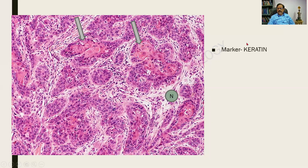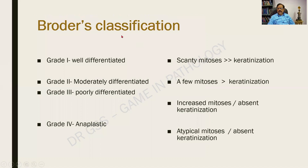The marker for squamous cell carcinoma can be keratin. This is the Broders classification — you need not know it in detail, but observe: a tumor can be well differentiated, moderately differentiated, poorly differentiated, or anaplastic. Accordingly, there will be more keratinization and epithelial pearls in a well-differentiated tumor; they will be absent in an anaplastic tumor. Mitosis will be scanty in a well-differentiated tumor, and will be increased and atypical as the grading progresses. You can mention this classification if you get a question on it.